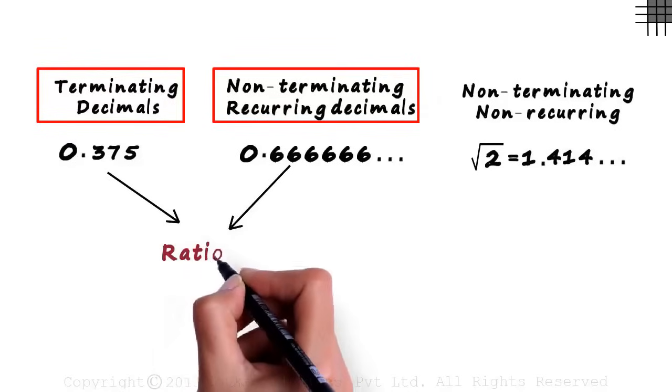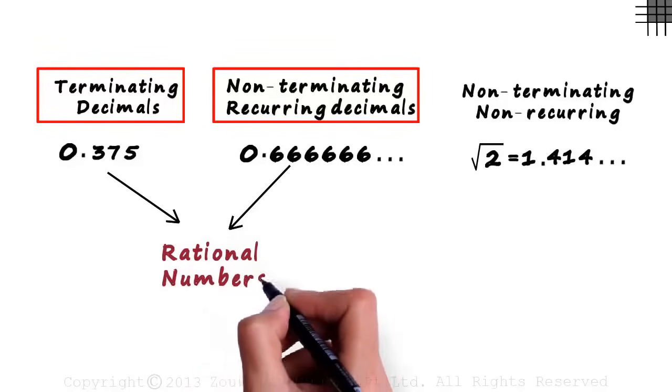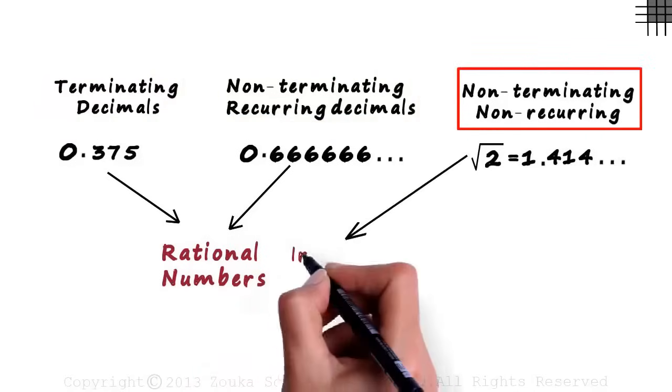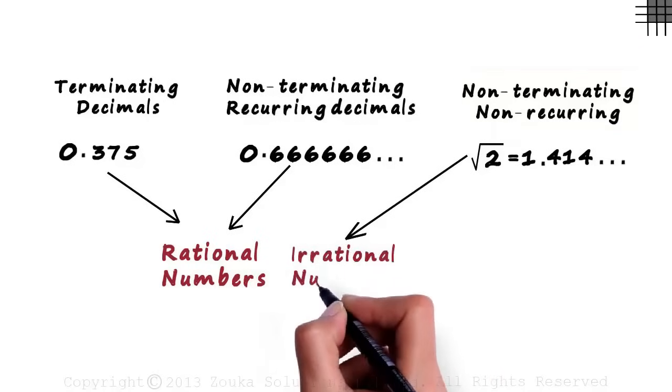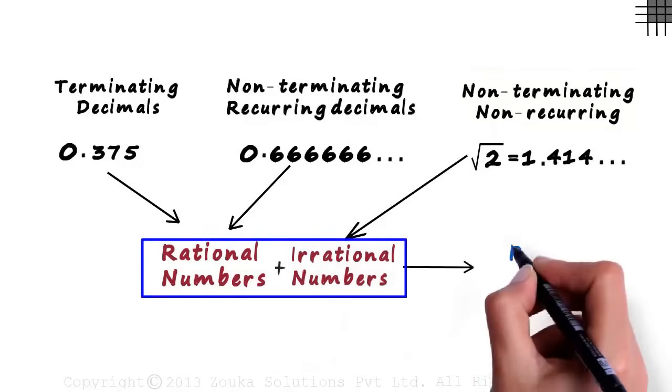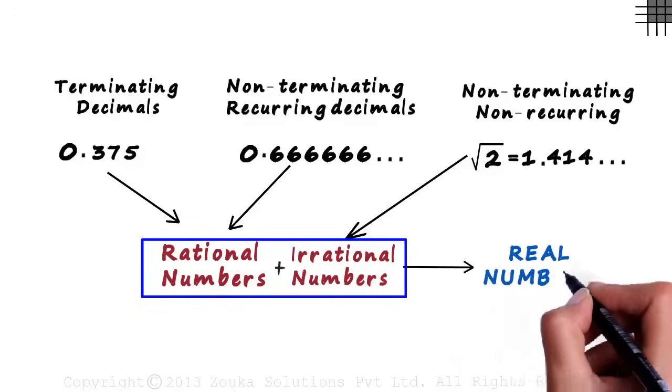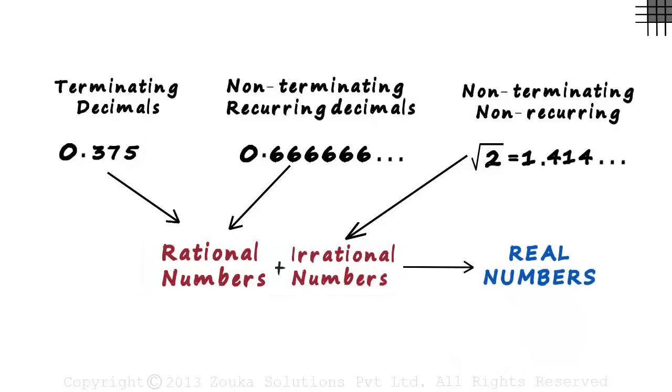These two categories together are called rational numbers. And the numbers in this category are called irrational numbers. These two categories together form real numbers. This is the other definition of real numbers. Rational numbers and irrational numbers together form real numbers.